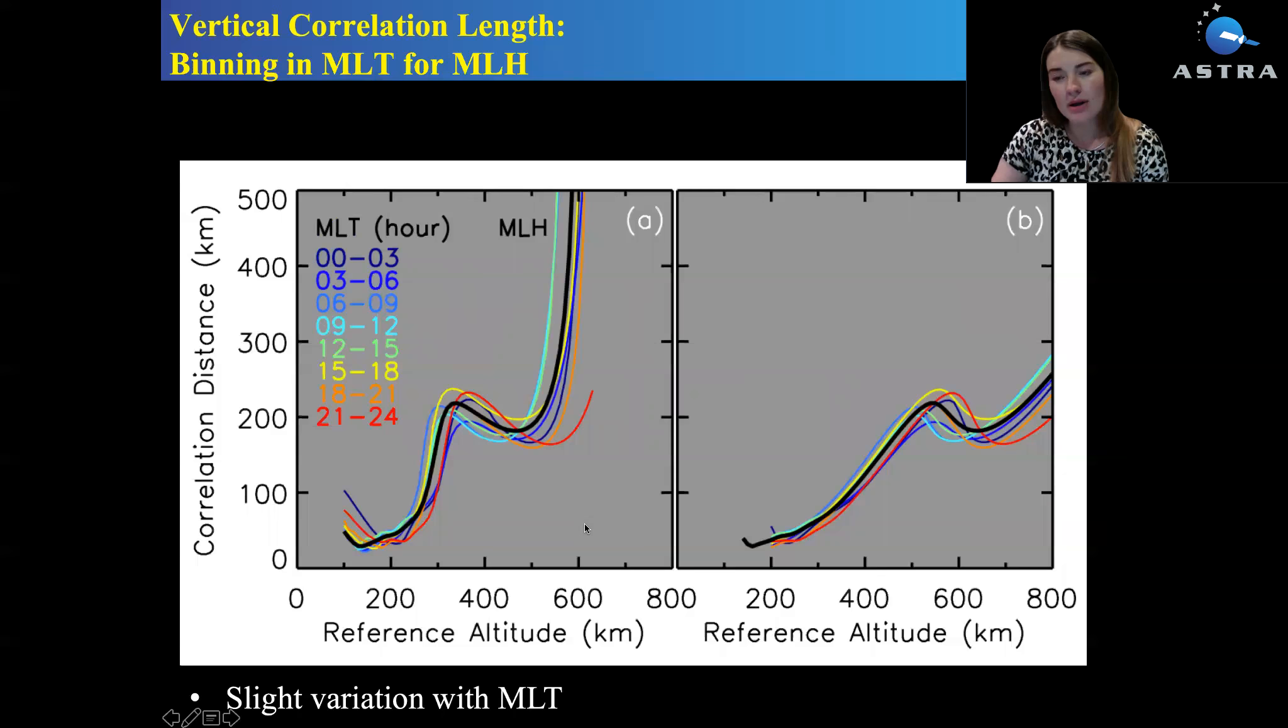Then I used Millstone Hill radar to also include some binning of data. If I bin the data in magnetic local time, this solid black line shows the correlations without introducing the binning and the color shows the binned data. You see that the variations are not as well defined. We basically can ignore the MLT variation for the modeling purposes.